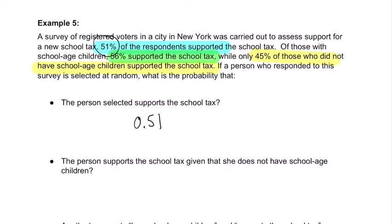The person supports the school tax given that she does not have school-age children. 45% of those who did not have school-age children supported the school tax. So we know she does not have school-age children — that's the part we know — and we know that 45% of those adults support the school tax. We can put 0.45.